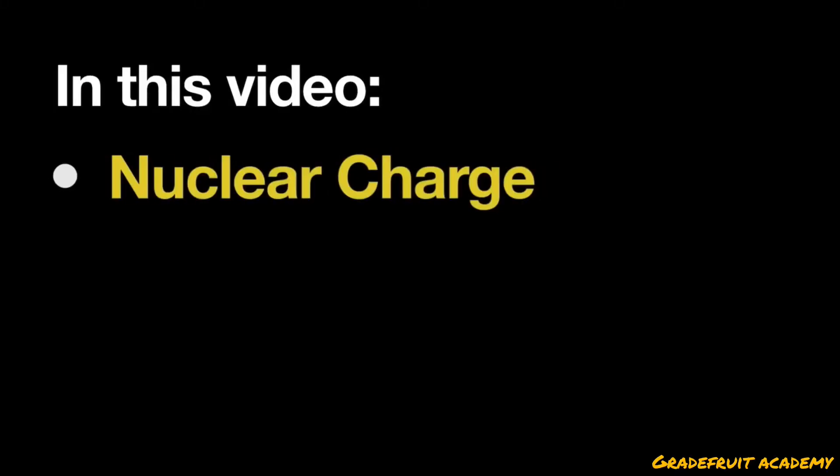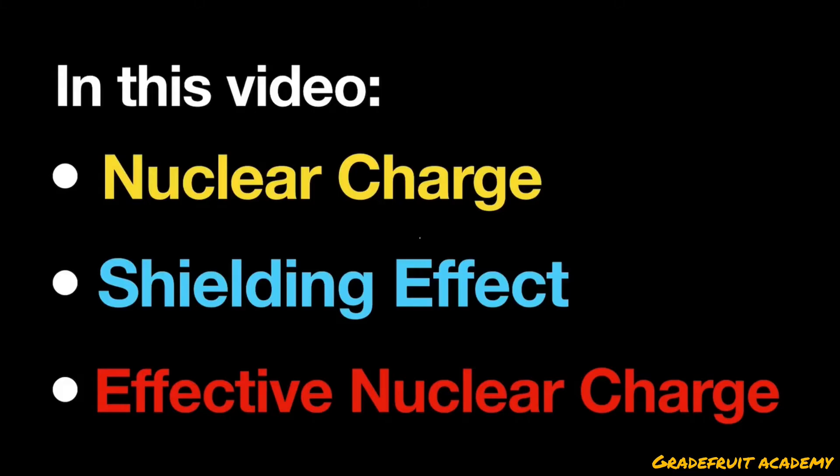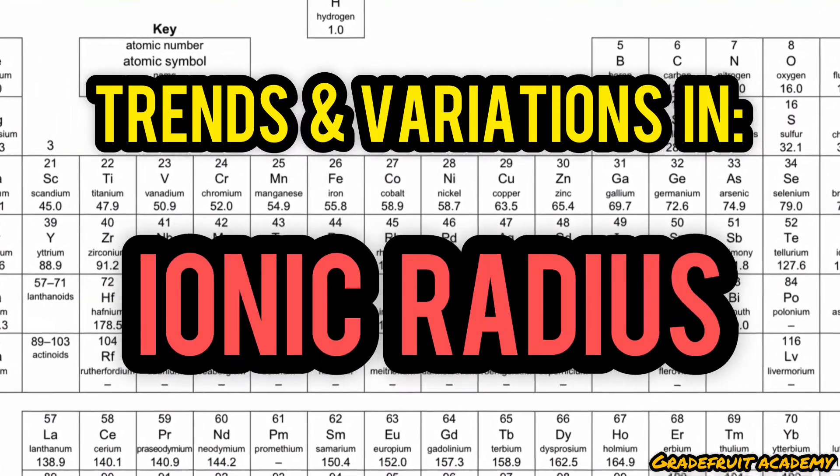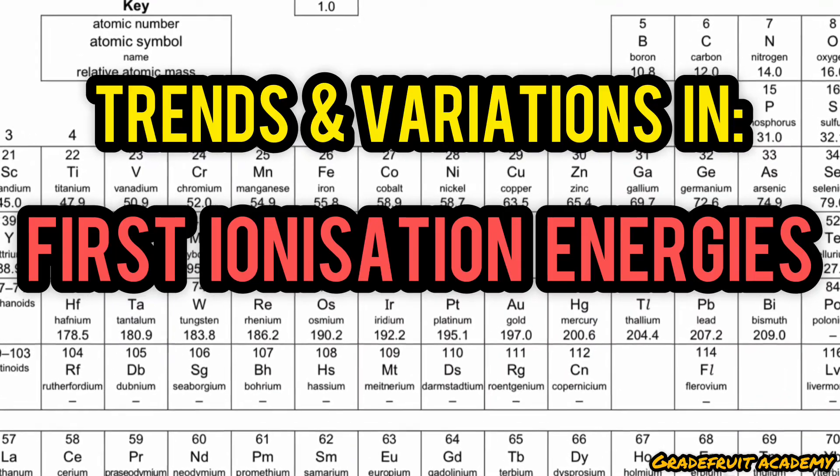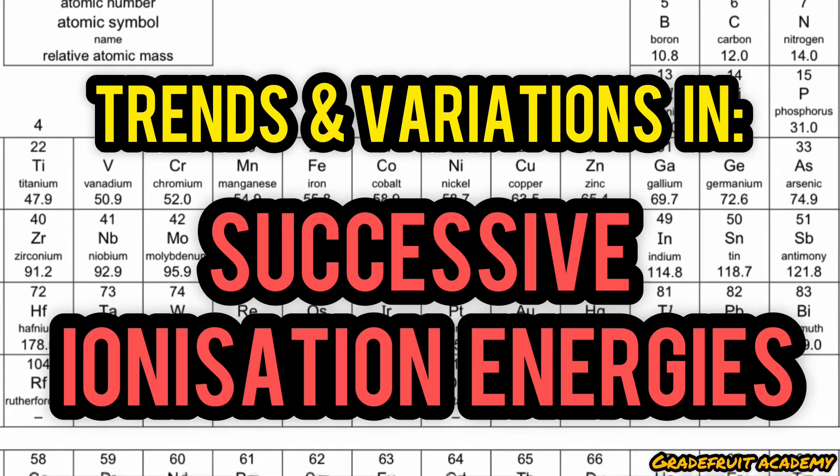Today, we're going to learn all about nuclear charge, shielding effect, and effective nuclear charge, because we will be using these concepts to explain the trends and variations in atomic radius, ionic radius, first ionization energies across a period and down a group, and the successive ionization energies. So do stay tuned for my upcoming videos.